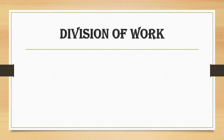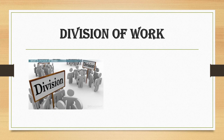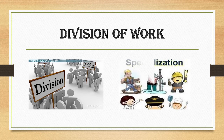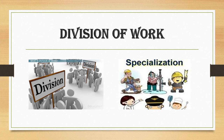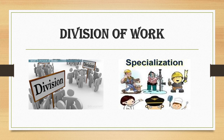Let's start with the first principle — division of work. We will focus on pictures to understand the meaning of these topics. In this picture, you can see different groups and different people who are doing their specific tasks and focusing on them. Henry Fayol suggested that the whole work should be divided into small tasks and assigned to persons according to their capability, qualification and experience.